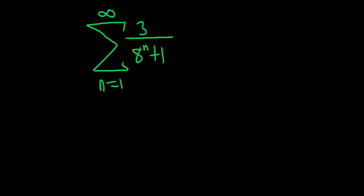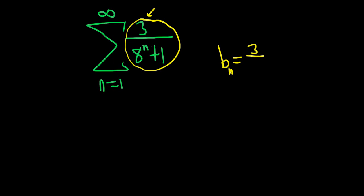You start by finding what's called b sub n. You look at this piece here and the trick that usually works is you just find something from this. You can write down the three if you want to — I'll write it — and then on the bottom just look at the highest degree term. Eight to the n has the highest growth rate; the one is irrelevant. So you basically look at the leading terms, so it's just that over that.